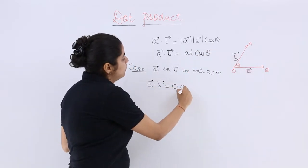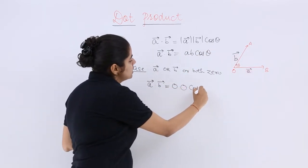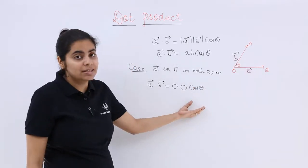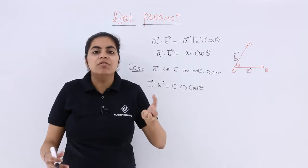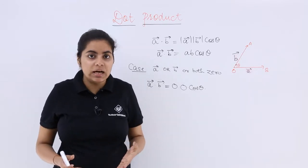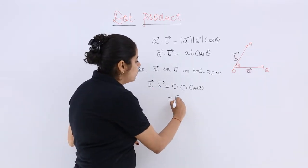So 0 multiply by 0 multiply by cos theta, whatever is there we don't consider it. So basically it is 0 only. So that means we are not at all concerned about theta and the dot product will come out to be 0.